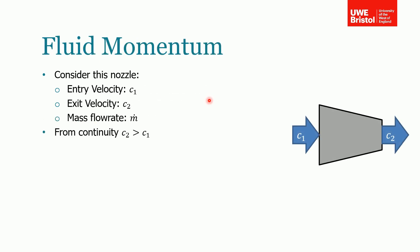We're going to derive the momentum forces considering this nozzle as an example. We've got fluid entering the nozzle with velocity c1. Assuming it's incompressible, from continuity we know the volumetric flow rate into the nozzle is the same coming out, and because the nozzle is narrowing in diameter, c2 must be greater than c1.